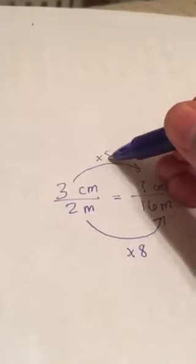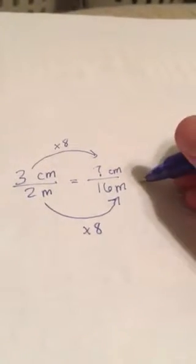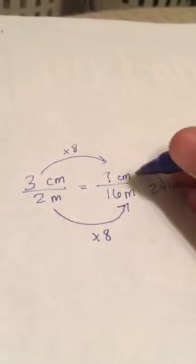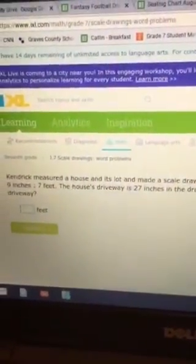Three times eight gives us our answer of 24 centimeters right here. And when we type that in, 24 centimeters, we have it correct. So there's an example.